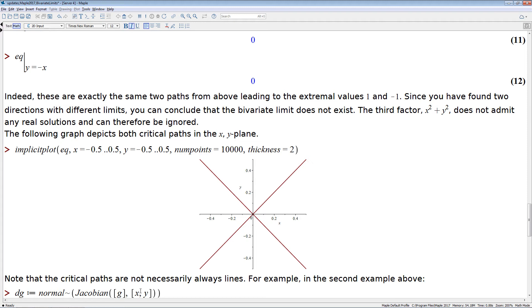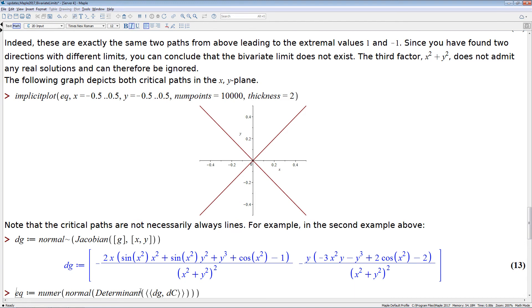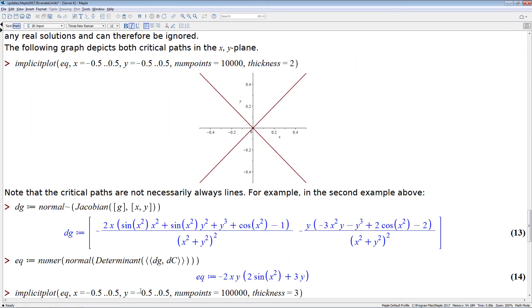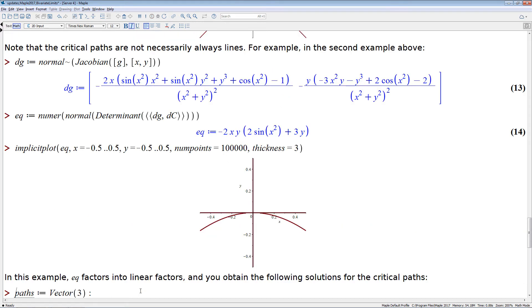So if you look at our second example where the limit exists, again, we take the Jacobian of our function, and we take the Jacobian of the circle, and then we compute the determinant of those two vectors, and that gives us the critical equation for our second example. And we can plot this equation in order to see all the critical curves, and you can see here that there are two critical curves, which we can also directly see from the equation, namely x equals 0 and y equals 0, so those are lines.